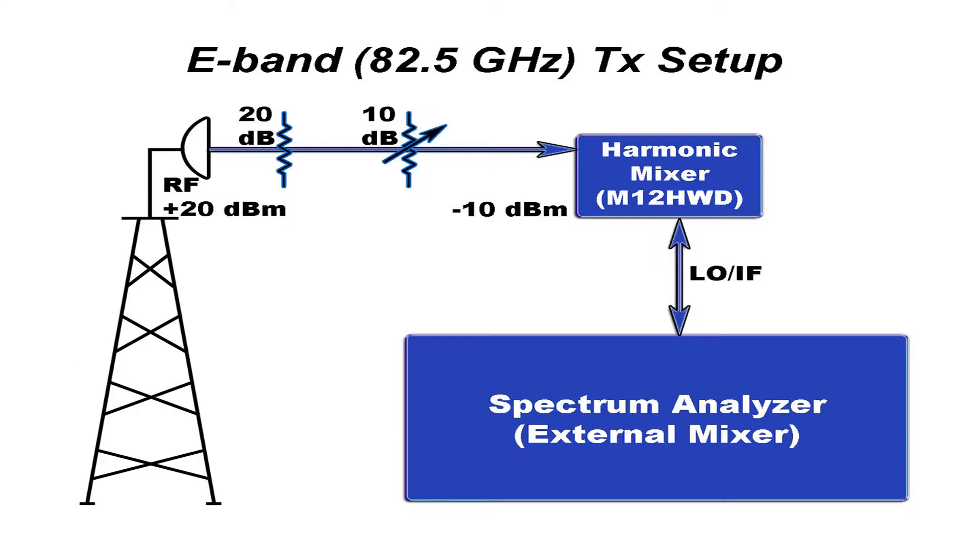The millimeter wave E-band measurement setup consists of an E-band transmitter, followed by a 20 dB attenuator, followed by an adjustable attenuator such that we can get an input power to the harmonic mixer, the OML M12HWD in this case, to avoid the compression point of minus 10 dBm. The external mixer is connected up to the spectrum analyzer for the measurement.